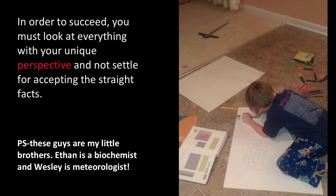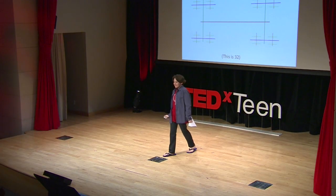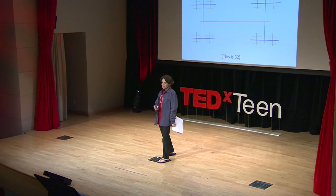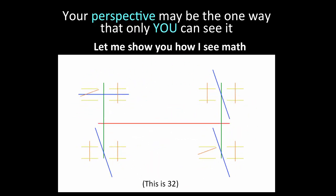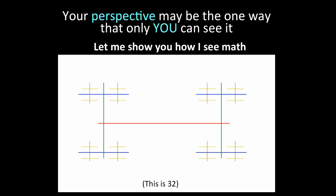The people I'm showing in the background are my little brothers, Ethan and Wesley. One of them is a chemist and the other one is a meteorologist. Your perspective might be the only way you can see art or history or music or whatever. Let me show you one of the ways in which I can see math. For example, that's 32, and the rotations represent addition, subtraction, division, multiplication, etc.